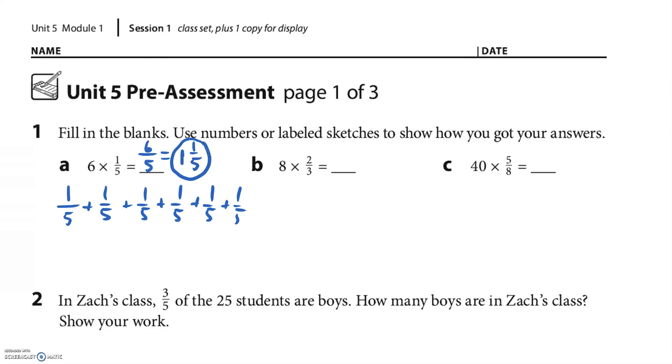All right, that's what I'm looking for. All right, let's do the next one. So 8 times 2/3, so I could write eight, I should write 2/3 eight times, or I know 2 times 8 is 16, 16/3, but let's change that to an improper fraction or a mixed number.